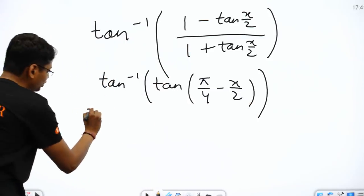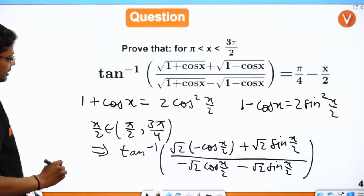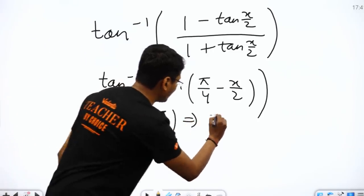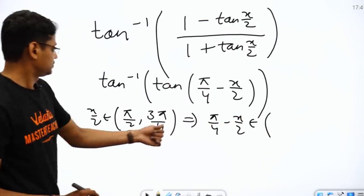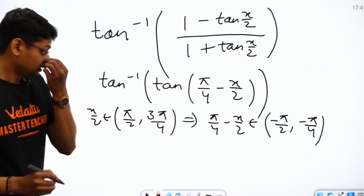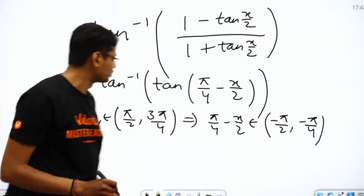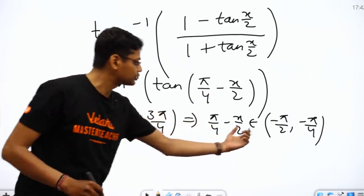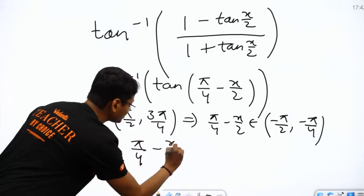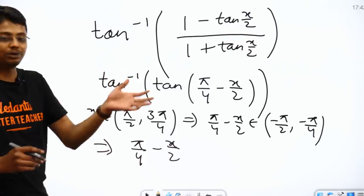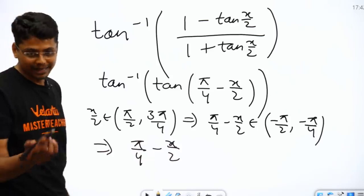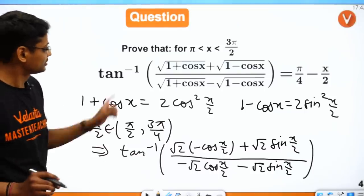Now x/2 belongs to [π/2, 3π/4], so π/4 − x/2 belongs to [−π/2, −π/4] — this is in the fourth quadrant. Since this range is a subset of the range of tan⁻¹ (which is (−π/2, π/2)), we can directly take tan⁻¹(tan(π/4 − x/2)) = π/4 − x/2. These kinds of domain reasoning are important to write explicitly in boards to get full marks. Hence proved.